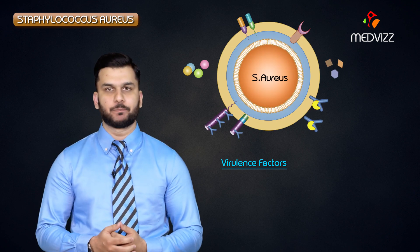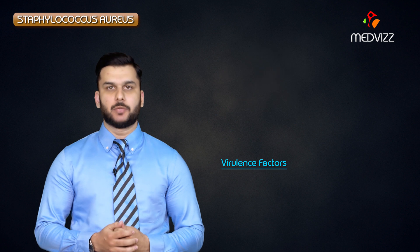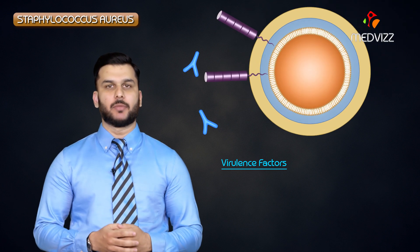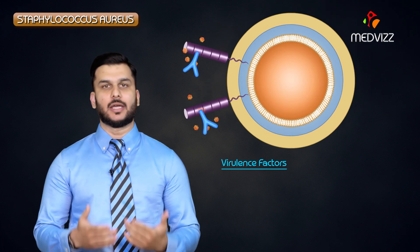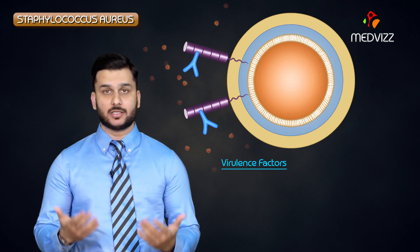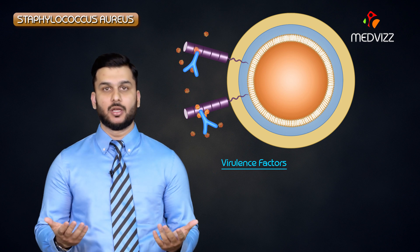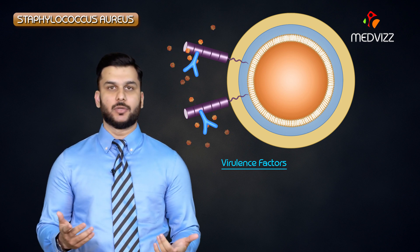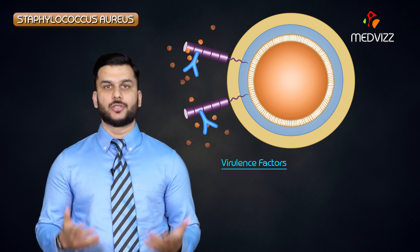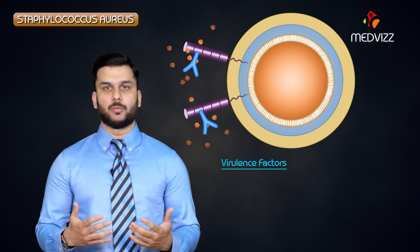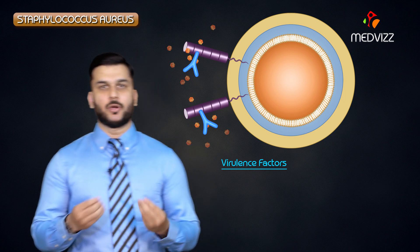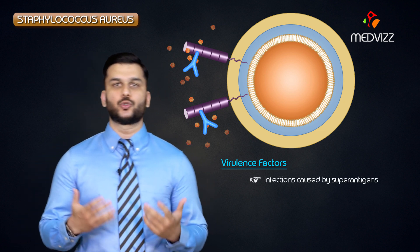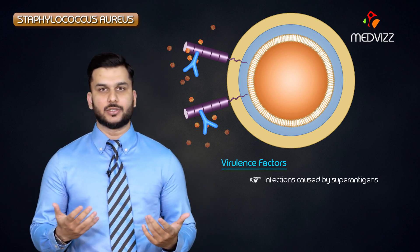What is the virulence factor that helps Staph aureus cause so many infections? It binds to the Fc fragment of immunoglobulin G, which leads to enhanced inflammation that we cannot control. Apart from this, it also produces certain superantigens.